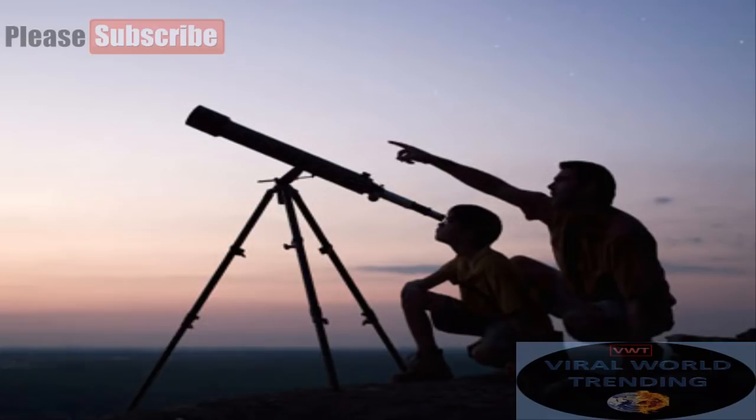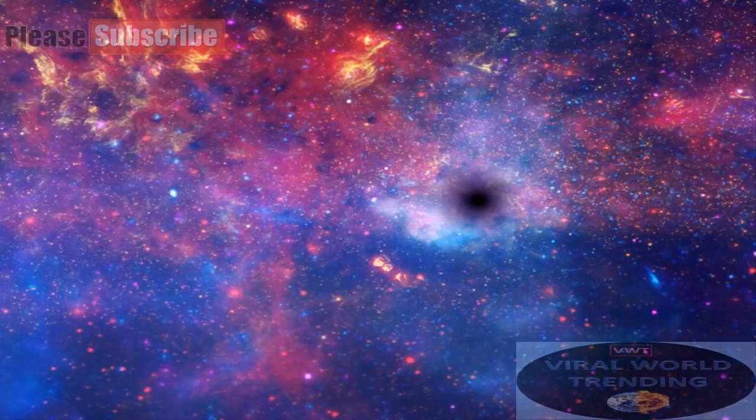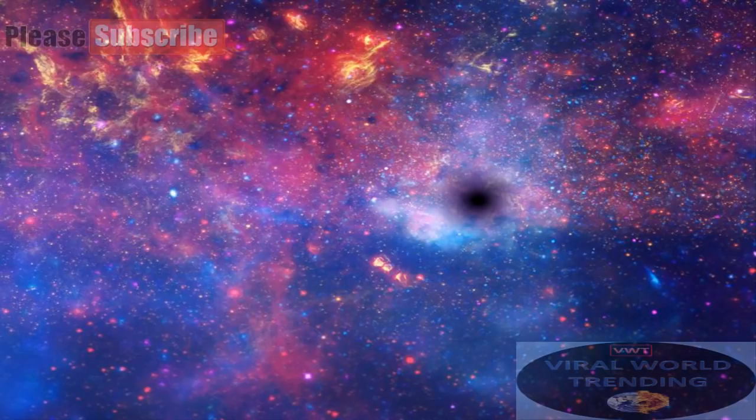How big are black holes? Black holes can be big or small. Scientists think the smallest black holes are as small as just one atom. These black holes are very tiny but have the mass of a large mountain. Mass is the amount of matter or stuff in an object.